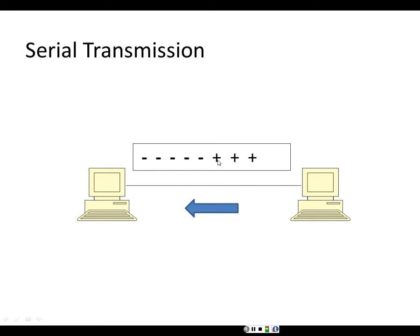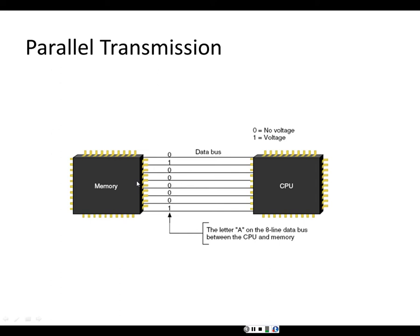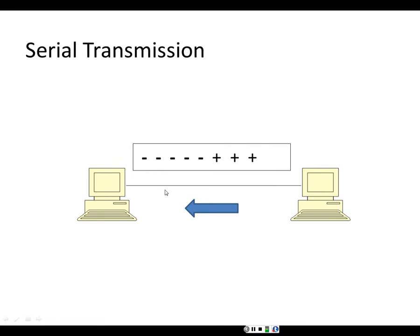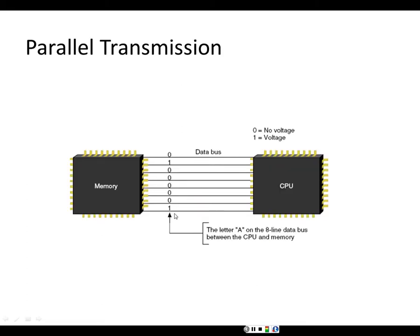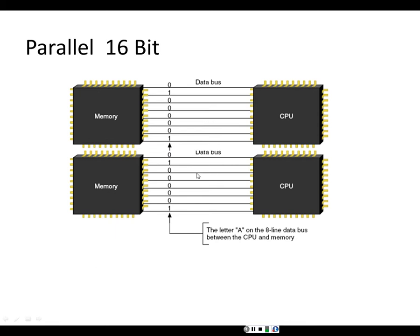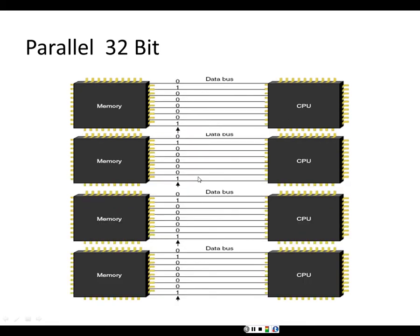Parallel transmission is typically used within a computer to connect the CPU to memory. Whereas serial transmission uses a single wire, parallel transmission uses eight wires and all eight bits can be transmitted at the same time — making it eight times faster than serial. This is called parallel 8-bit transmission. We also have parallel 16-bit, 32-bit, and 64-bit transmission.